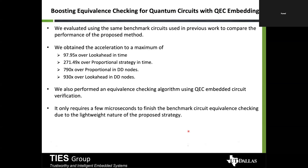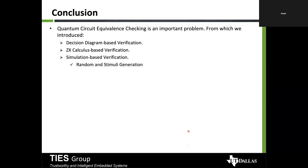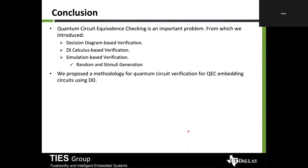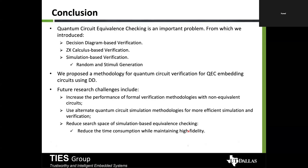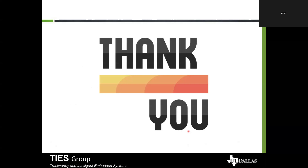To conclude: in this talk we learned about various aspects of quantum circuit equivalence checking — why it is necessary and what the different approaches are. We covered formal methods like decision diagrams and ZX calculus, and simulation-based verification including random and designed stimuli generation. We proposed a methodology for quantum circuit verification with QEC embeddings. Future research challenges include improving formal verification for non-equivalent circuits, using alternate simulation methodologies, and reducing search space for simulation. There are only a few papers on quantum circuit verification, and this is a very important challenge that deserves more attention.